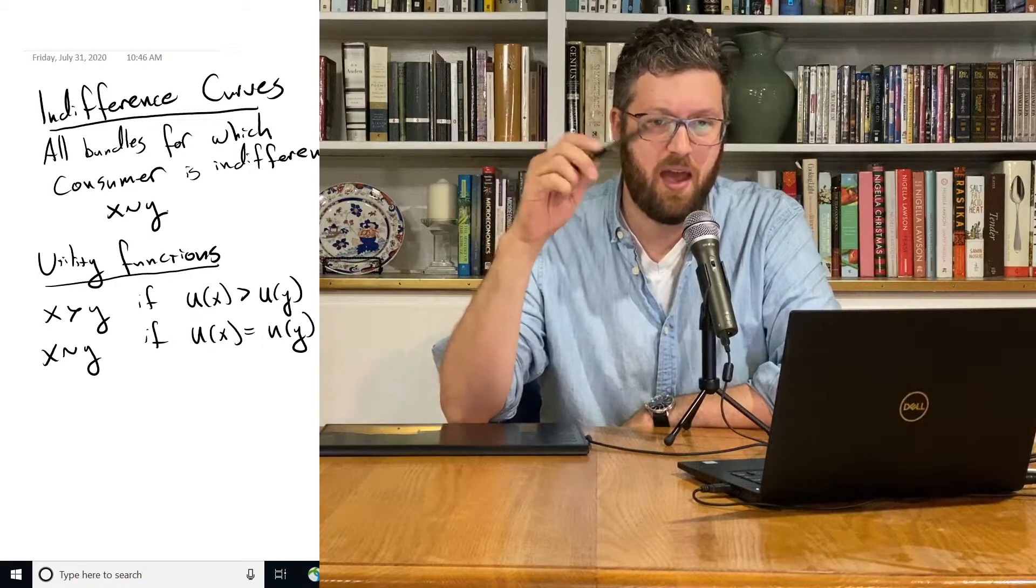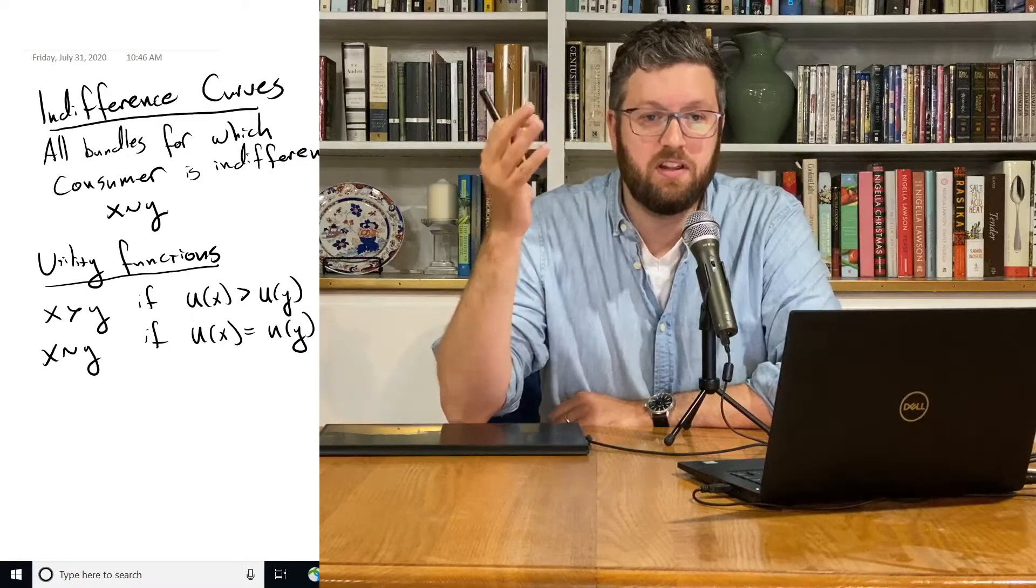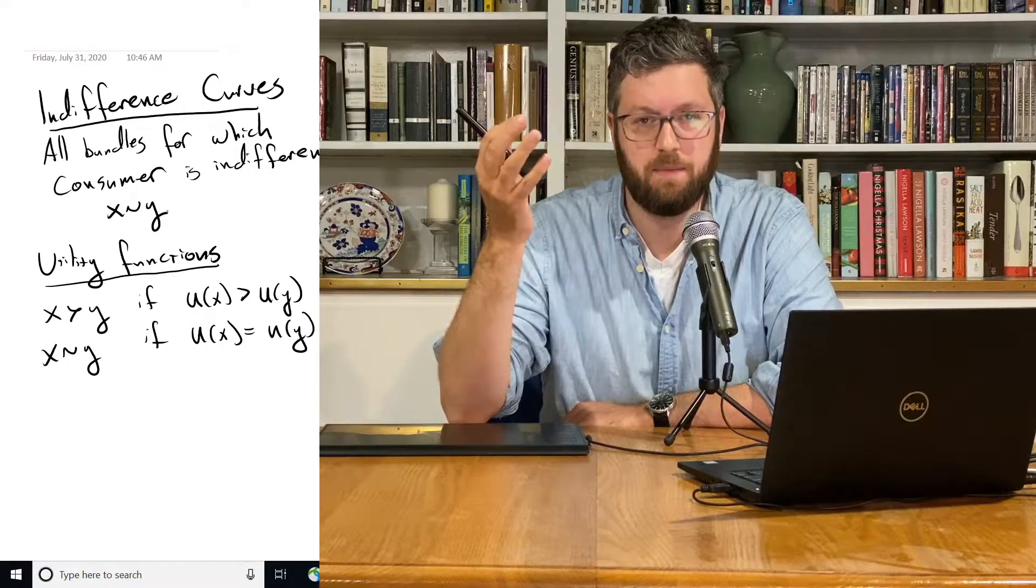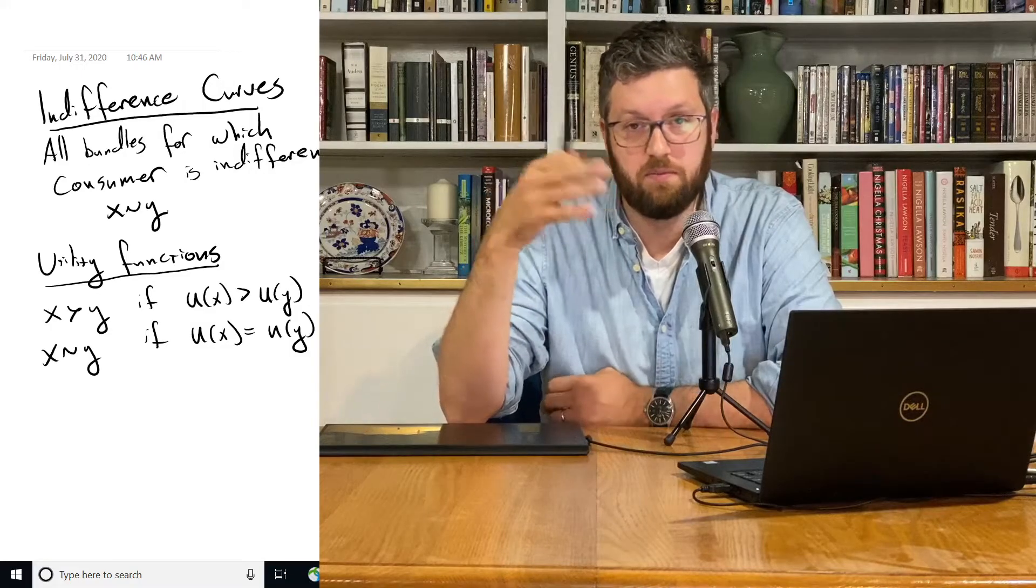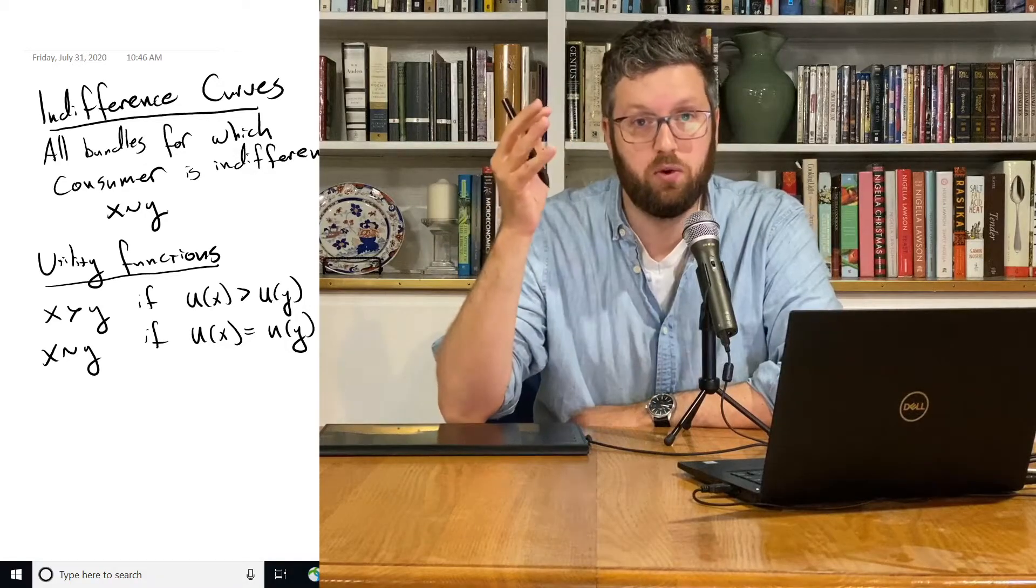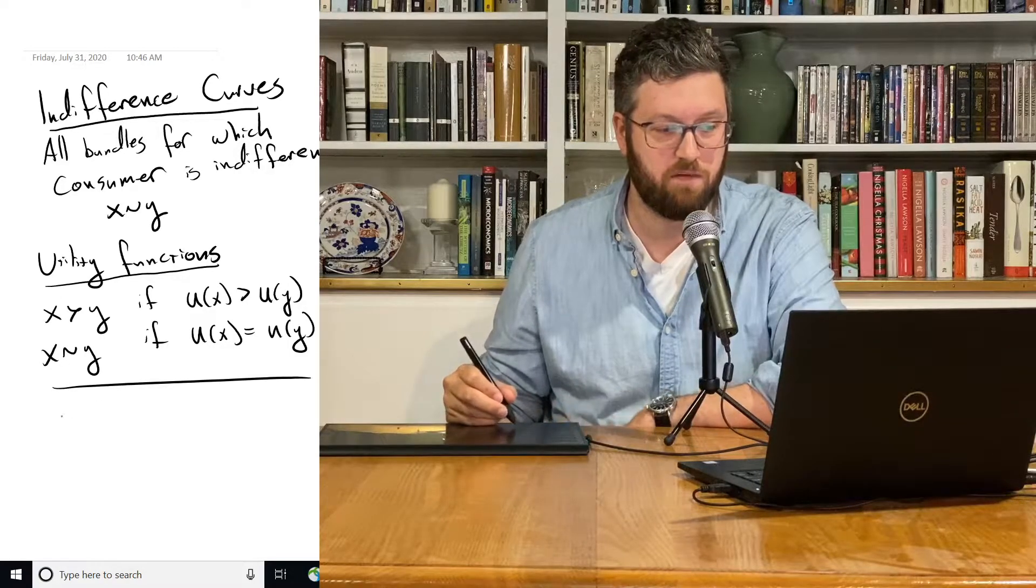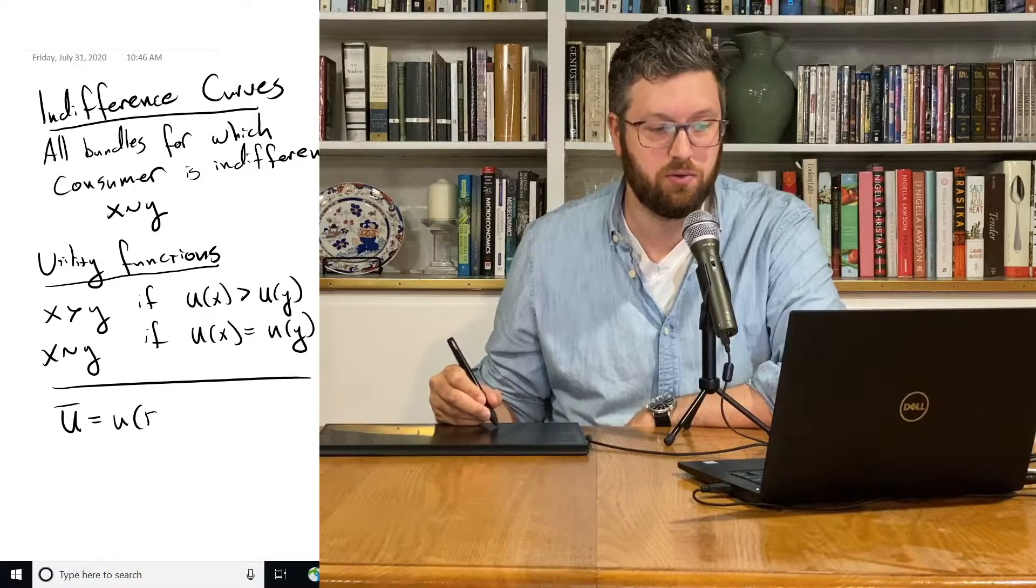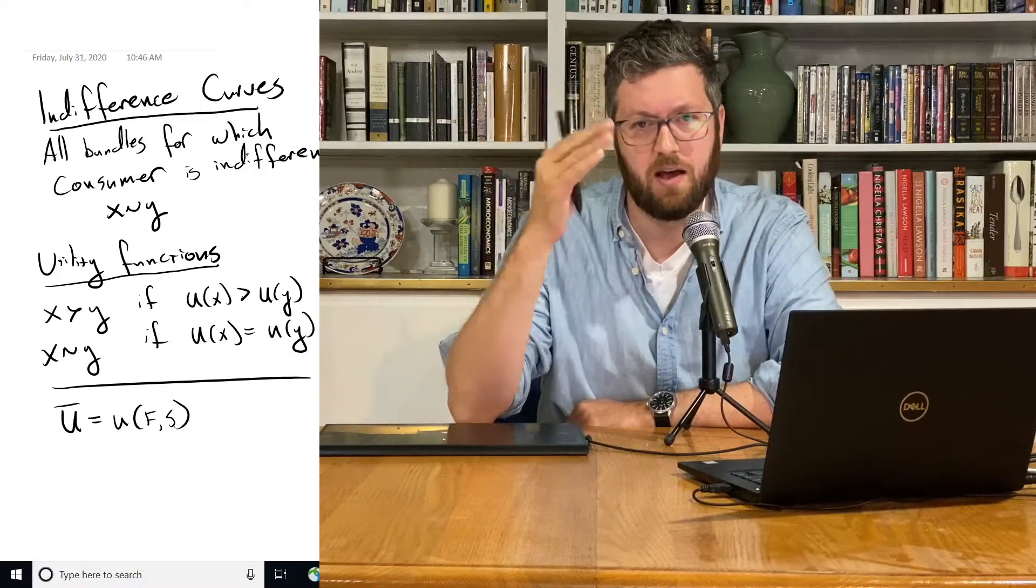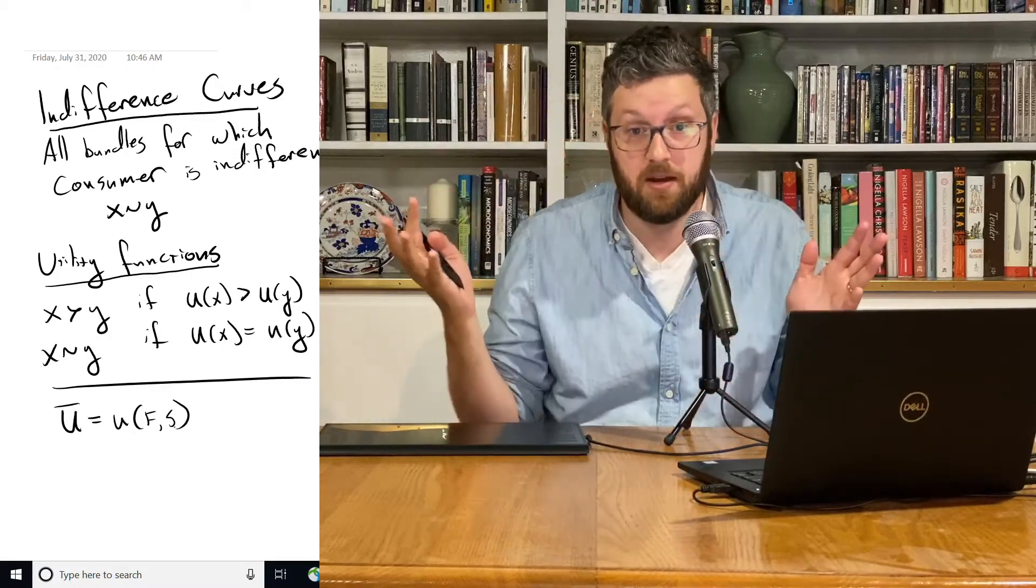Okay, so if x is preferred to y, down here, that means that the utility, the number associated with the utility of x, is greater than the utility of y. And if x and y are indifferent, if we're indifferent between those two options, it means that the utility associated with x is equal to the utility associated with y. And that means we can use a utility function to draw an indifference curve by just setting it equal to some number. Capital U with a bar over it in this case. And that's going to tell us all combinations of f and s that give us the same utility. And since anything with the same utility we're indifferent to, this gives us an indifference curve.